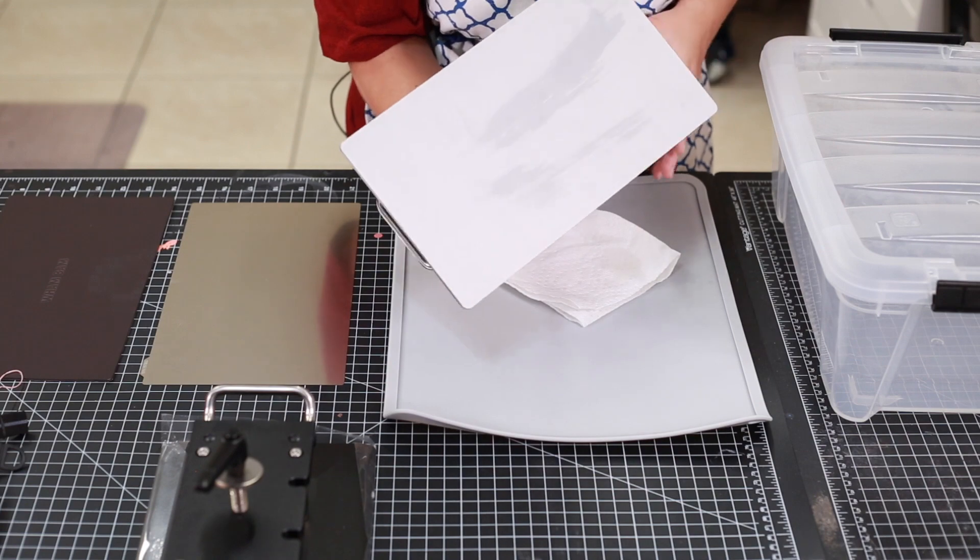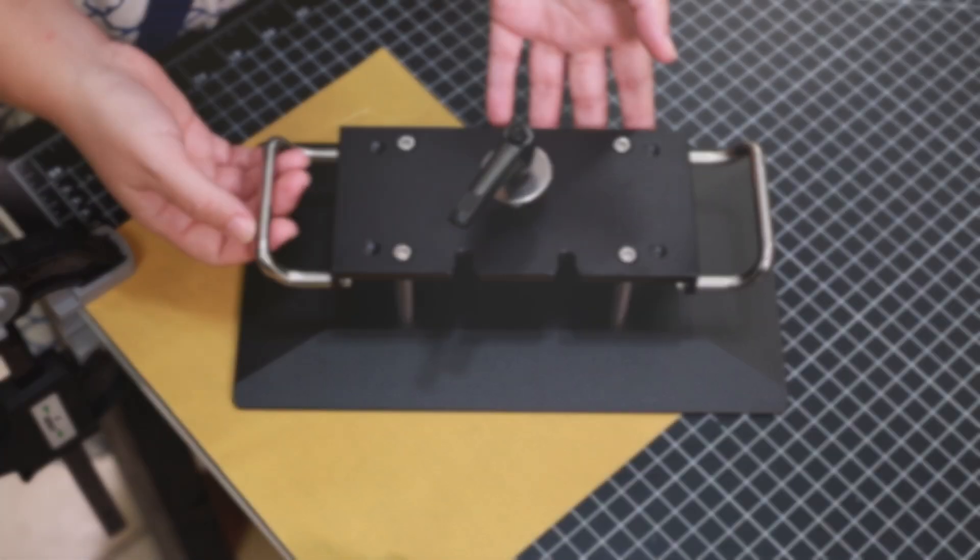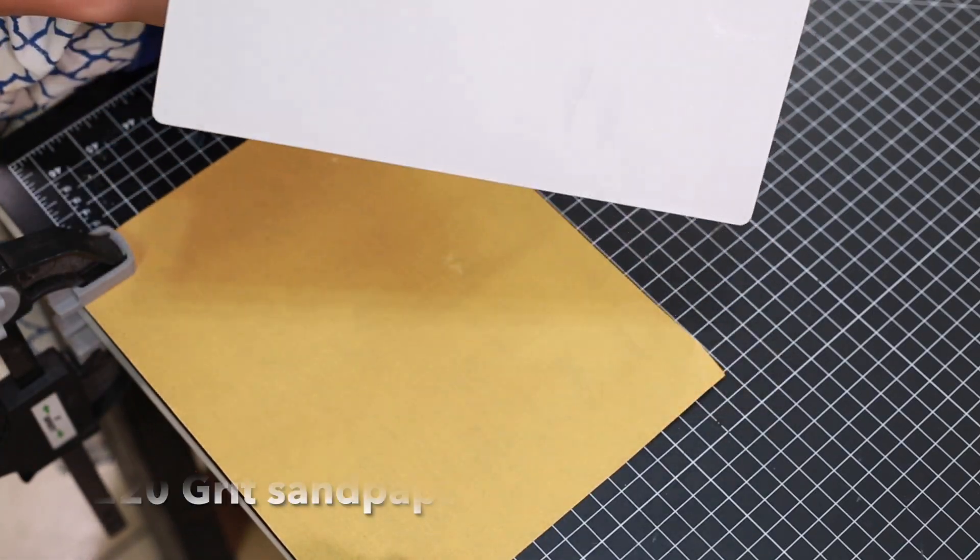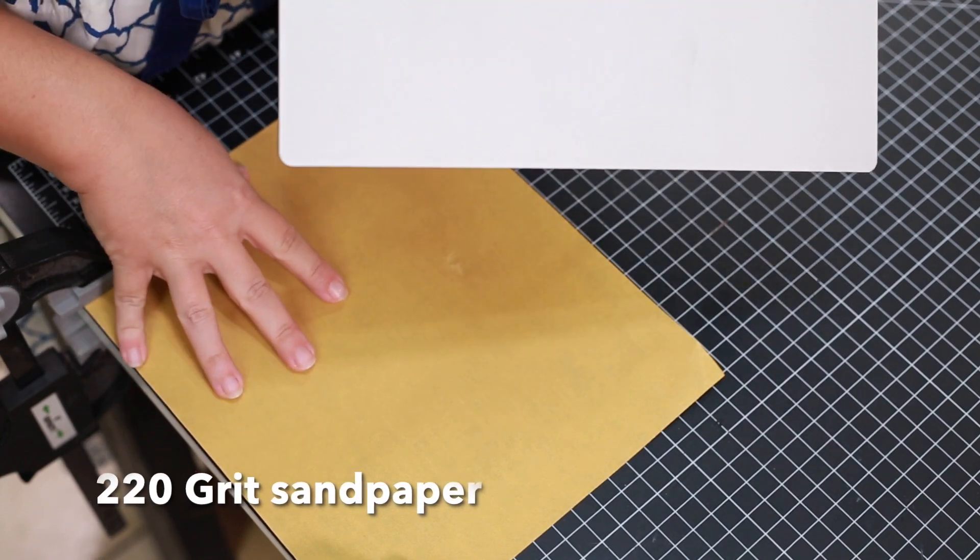And after that we're going to go ahead and sand it on the 220 sandpaper. Okay, so I have my sandpaper clamped down here. I'm using my own piece for this part.